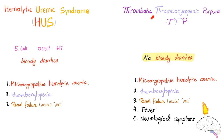HUS is a triad, but thrombotic thrombocytopenic purpura is a pentad. Typical HUS involves E. coli O157:H7 and presents with bloody diarrhea. The triad consists of: number one, microangiopathic hemolytic anemia; number two, thrombocytopenia; and number three, acute renal failure.